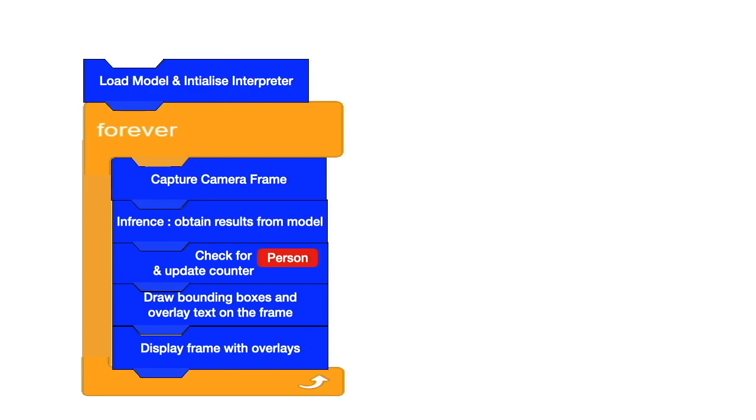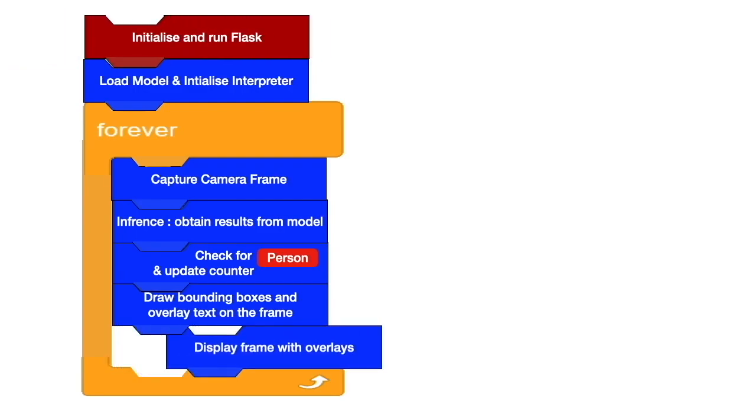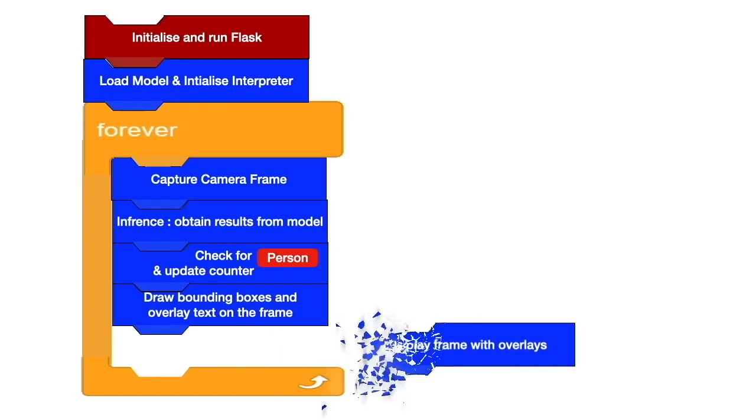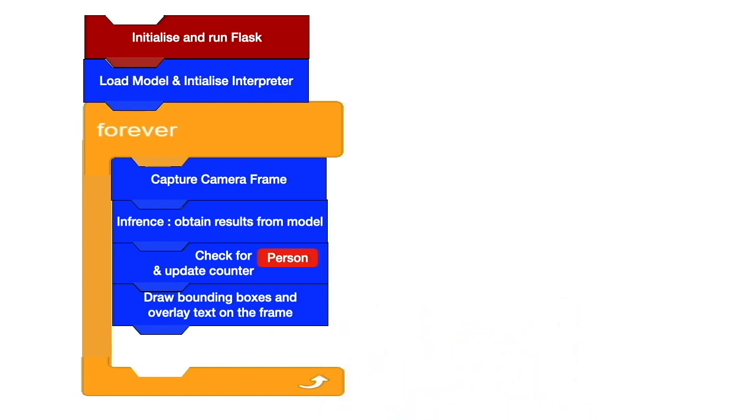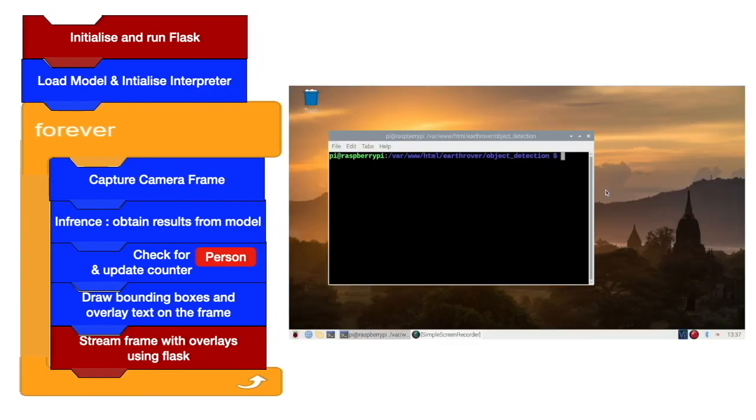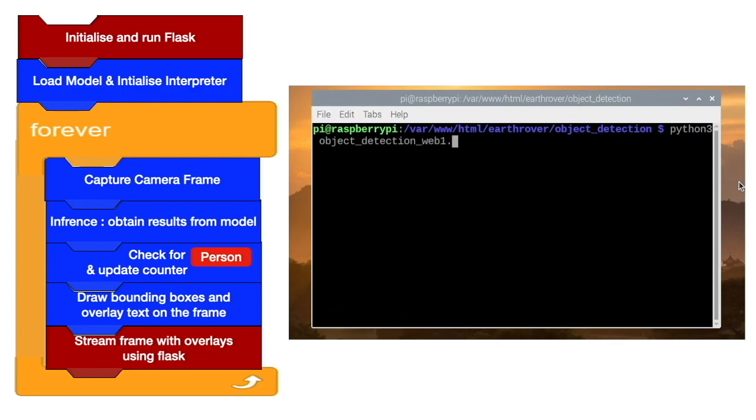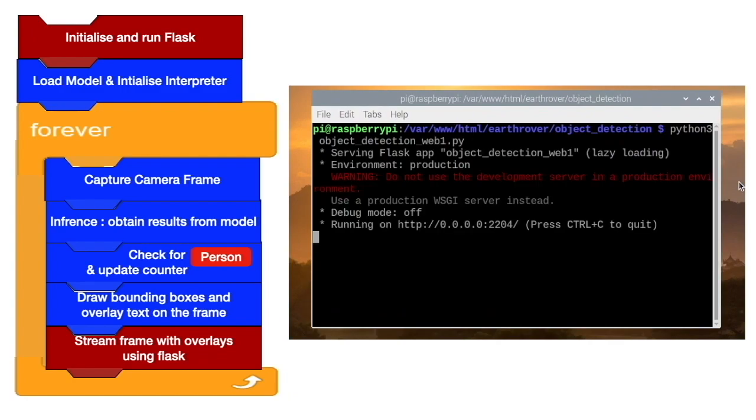In this stage I modified the code by initializing and running Flask in the beginning. This part of the code is omitted which displays the output locally, and new code is added here to stream the output over LAN. Now when we execute the code this message is displayed showing IP address and port to access the output stream.